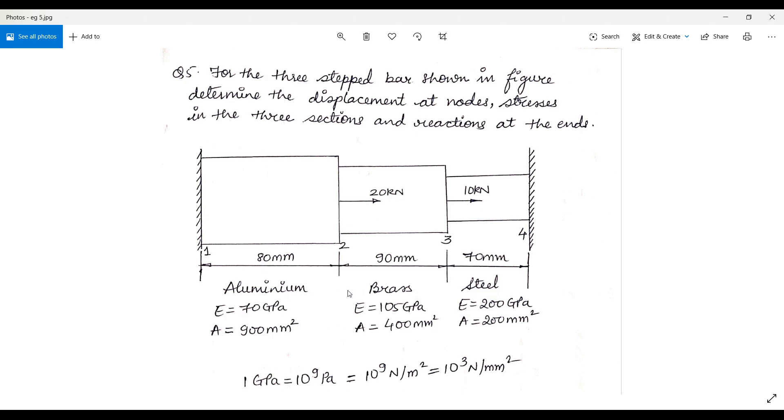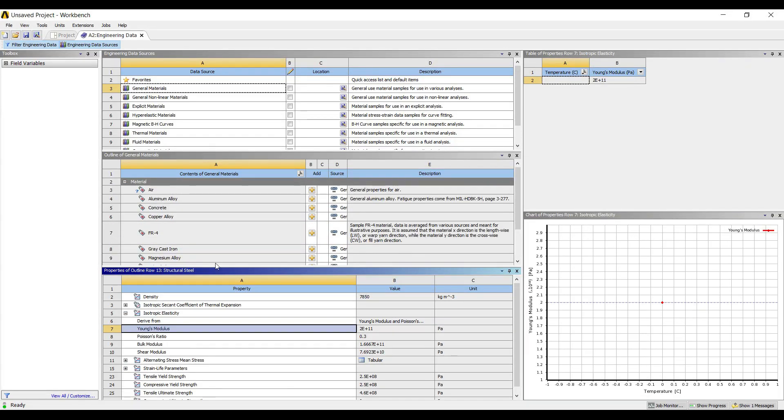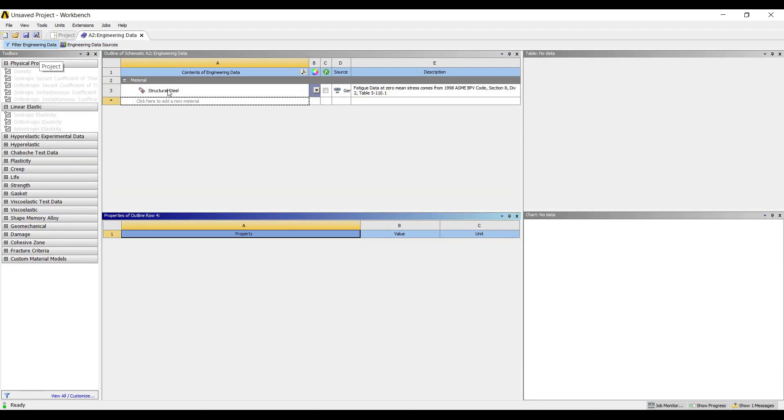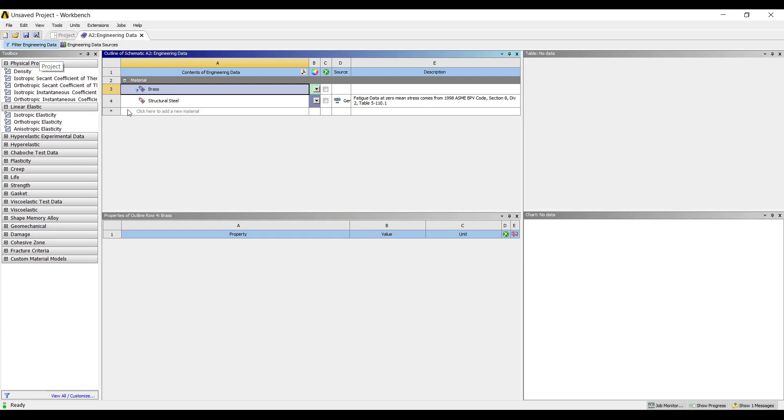Brass is something which is not available here, so I will have to create the material of brass. I will just uncheck engineering data sources. Here I will write brass, I will go to isotropic elasticity.